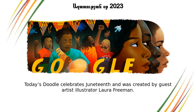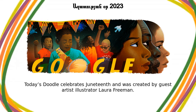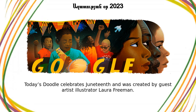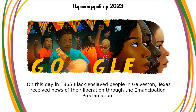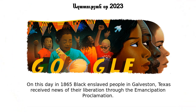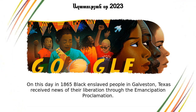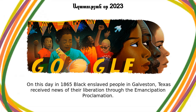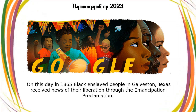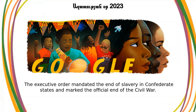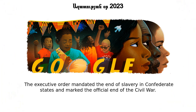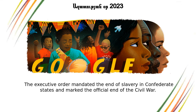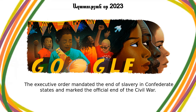Today's Doodle celebrates Juneteenth and was created by guest artist-illustrator Laura Freeman. On this day in 1865, Black enslaved people in Galveston, Texas received news of their liberation through the Emancipation Proclamation. The executive order mandated the end of slavery in Confederate states and marked the official end of the Civil War.